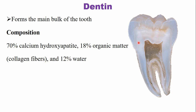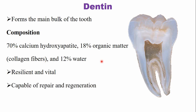Water is present in greater proportion in dentine compared to enamel. Dentine is resilient and vital — it absorbs the forces of mastication and prevents fracture of the overlying enamel. Dentine is capable of repair and regeneration because the formative cells are present inside the dental pulp. The stem cells are present in the vital tooth in the dental pulp, so repair and regeneration are possible for dentine.